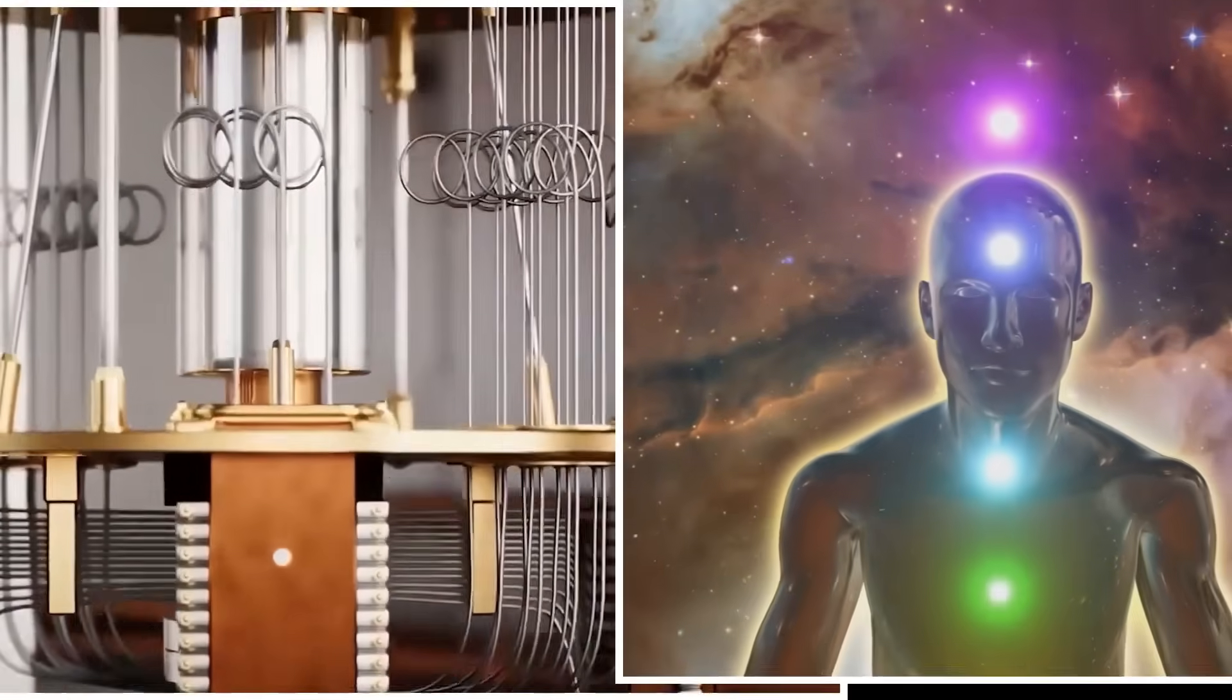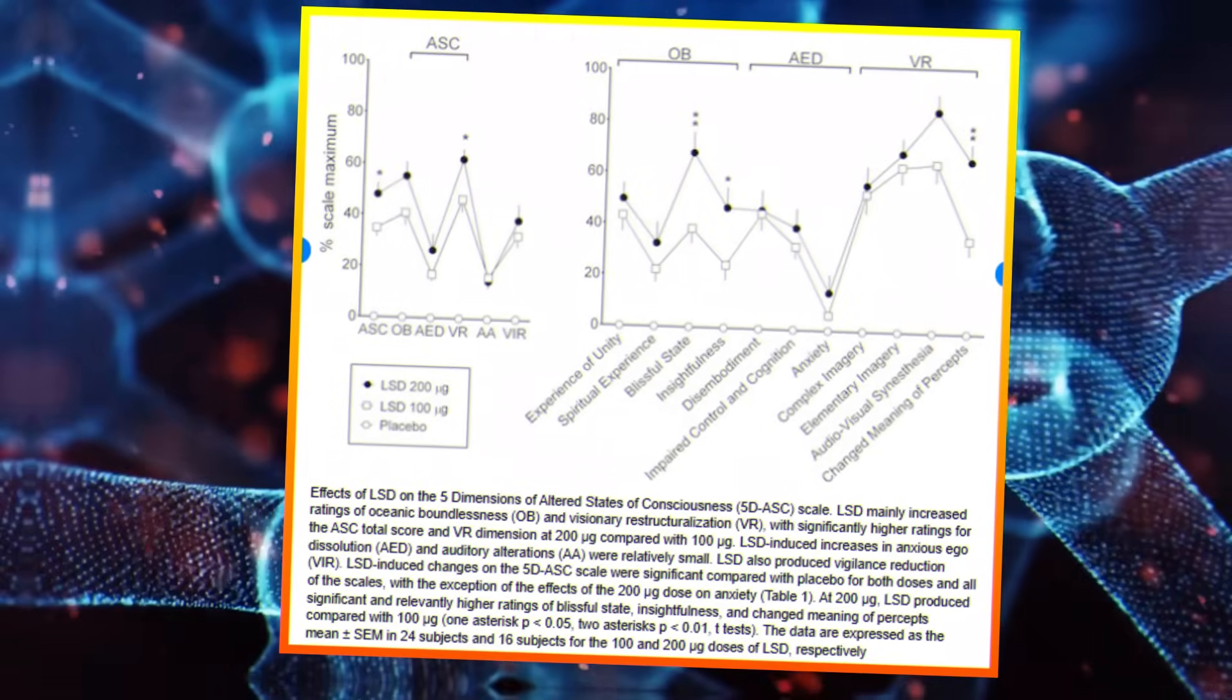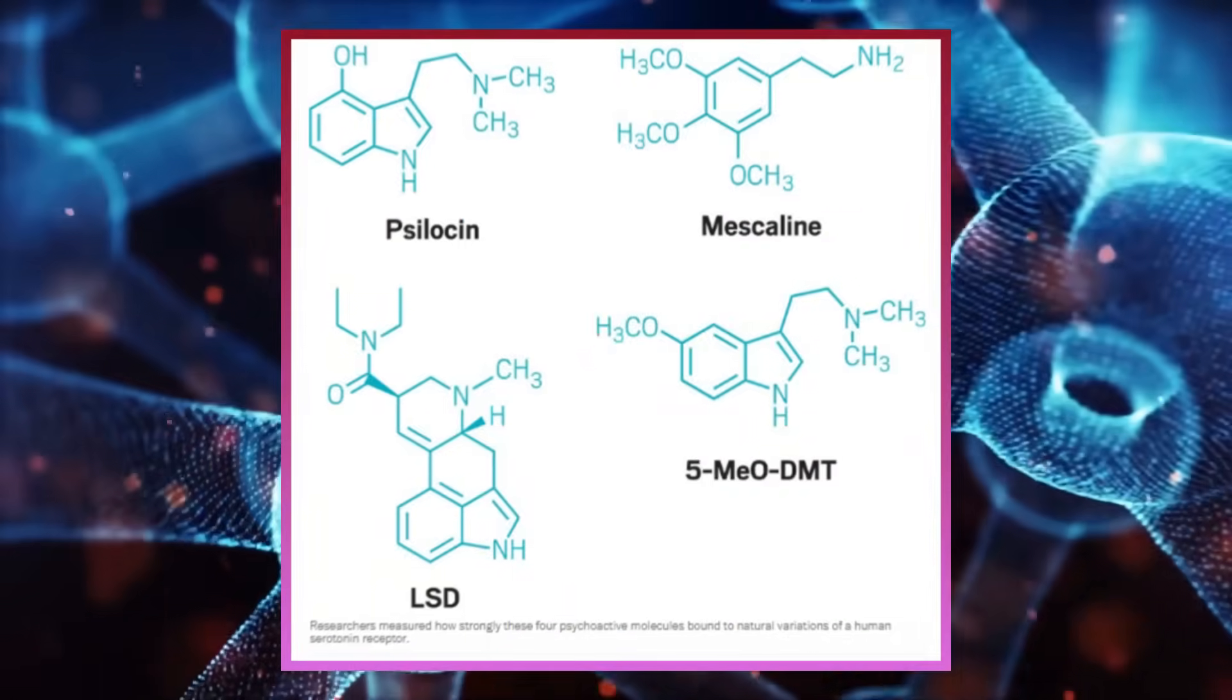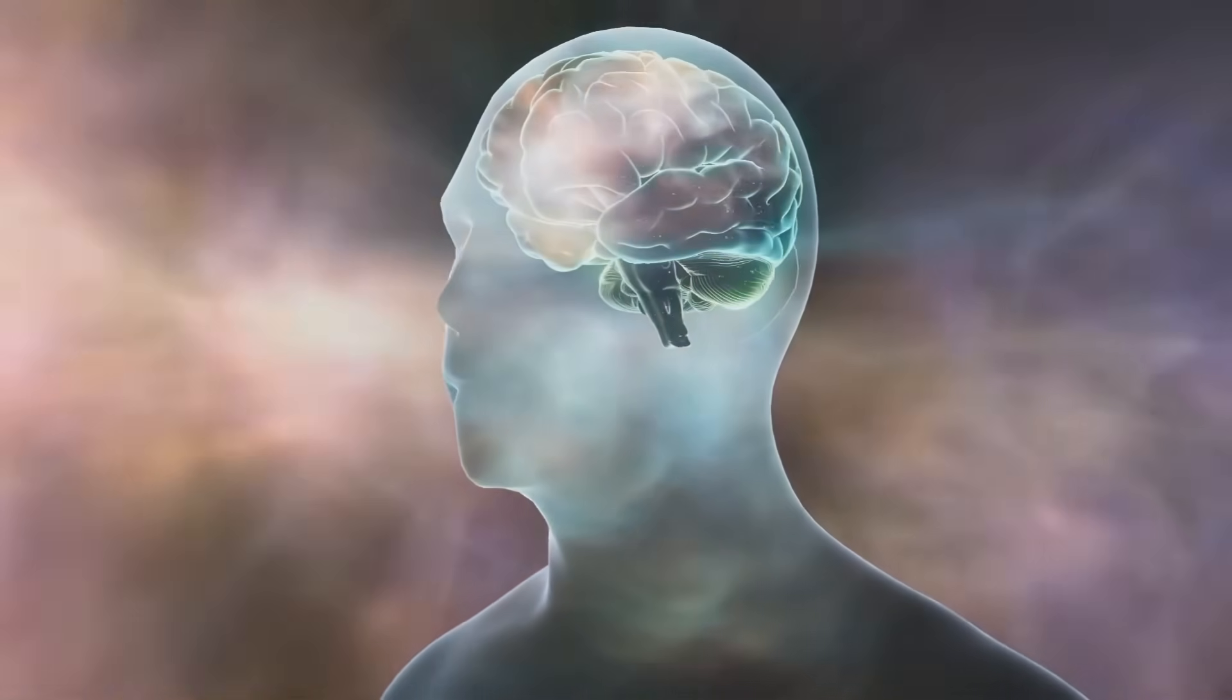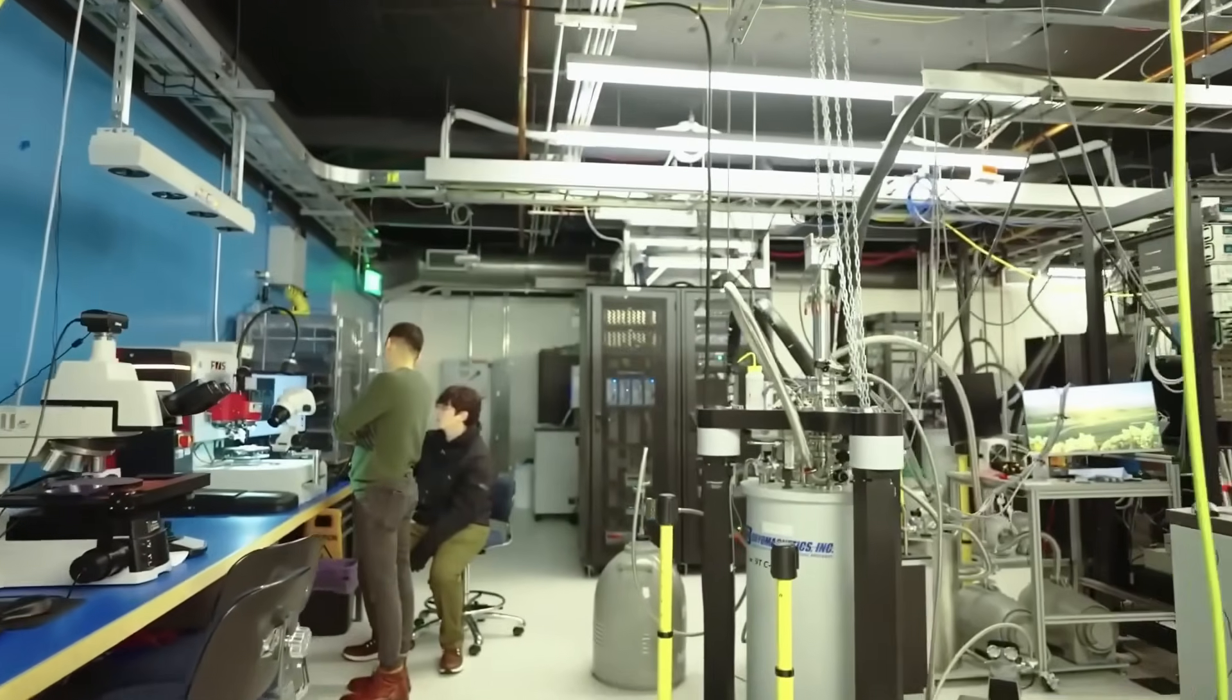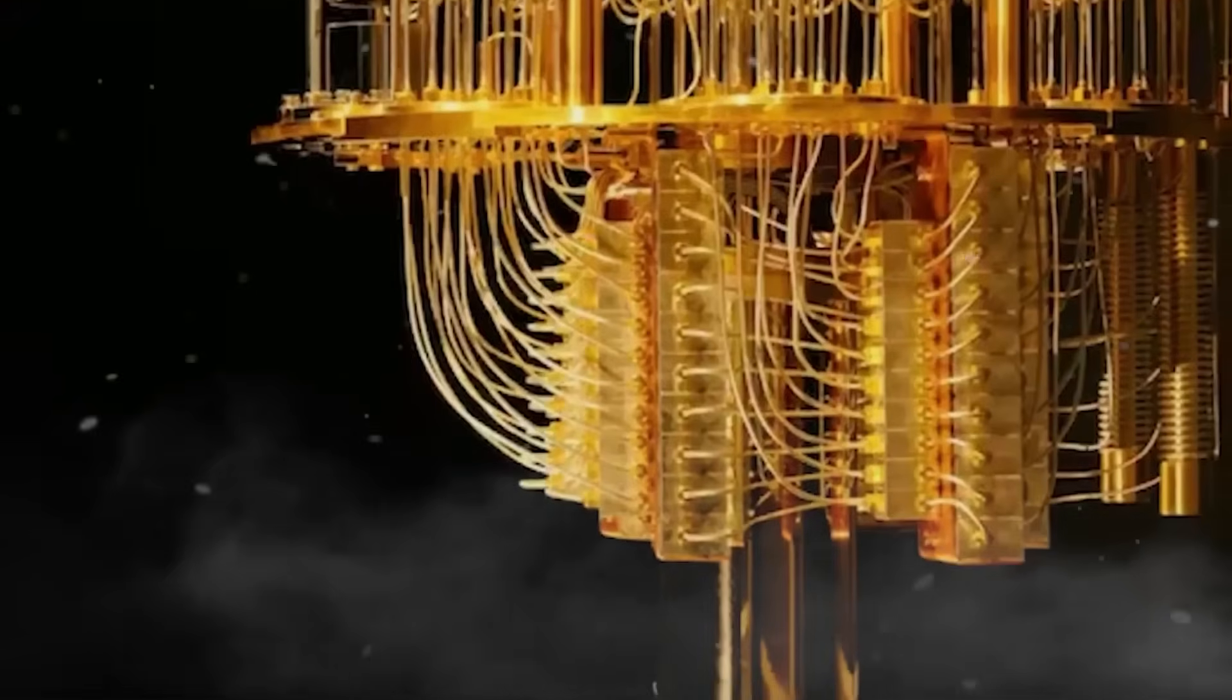Michio Kaku described this phenomenon as a consciousness feedback loop. Imagine your brain not only creating visions, but also receiving a kind of information from a cosmic network, an interconnected field that exists beyond the confines of your individual mind.